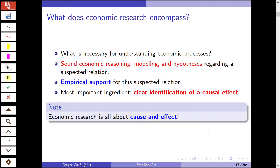What is necessary for understanding economic processes? First of all, we need sound economic reasoning. We don't do empirical research just because we want to do empirical research, but because we have a sound theoretical economic understanding of what is going on — or at least a well-posed hypothesis of what should be going on — and thus we arrive at a suspected relation, for example between two variables. We then try to find empirical support for this suspected relation. So we start with a hypothesis, a theoretical model, or anything else that leads us to a still unanswered hypothetical question.